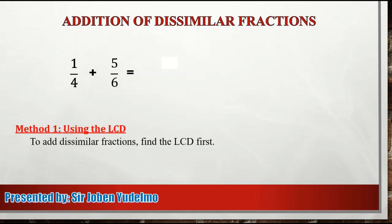To add dissimilar fractions, we need to find first their LCD. Ang LCD, in other words, ay siya ring LCM or least common multiple ng ating mga denominators. So sa ating given, ang mga denominators natin dyan ay 4 at saka 6. At ang kanilang LCM or LCD ay 12.